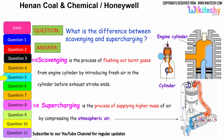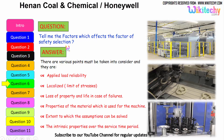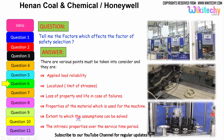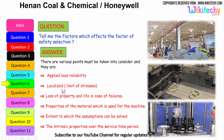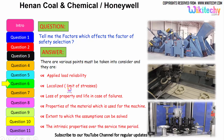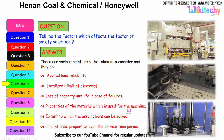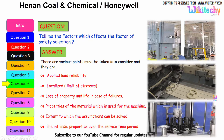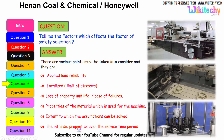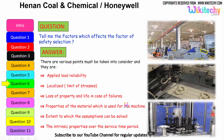In supercharging, a high pressure of air is injected into the cylinder to compress the atmospheric air. Now let us see the factors which affect the factor of safety selection. These include: applied load reliability, limit of localized stresses, and loss of property and life in case of failures. Also important are the properties of the material used for the machine, the extent to which assumptions can be solved — how much it will extend or compress — and the intrinsic property over the service time period.